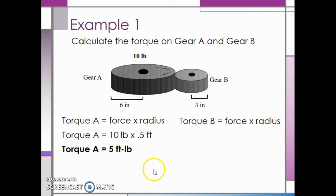On gear B, the force we are assuming is 10 pounds, and the radius is 0.25 feet, which is 3 inches converted into feet. Multiplying, we see that the torque on gear B is 2.5 foot pounds. The radius of gear A is twice as large as gear B, so we would expect the torque to be twice as large.